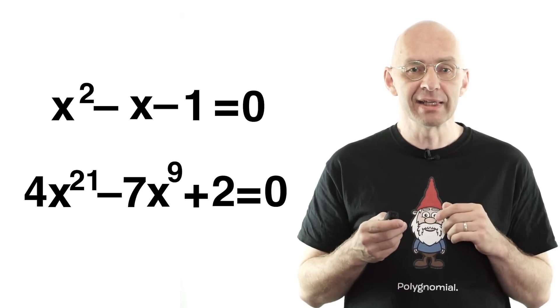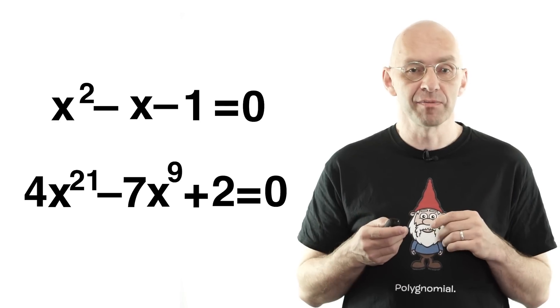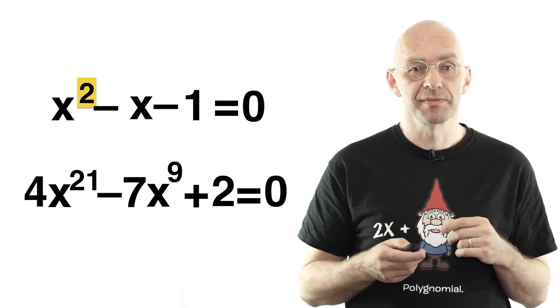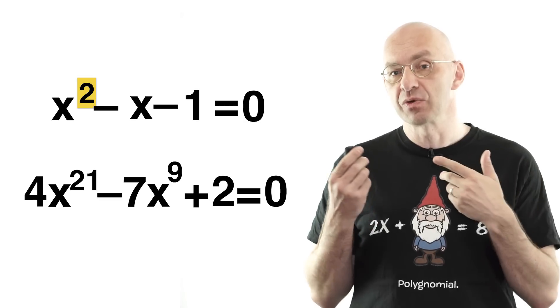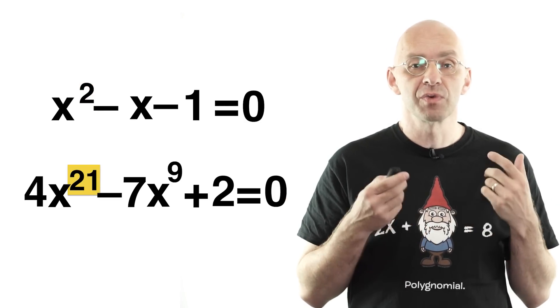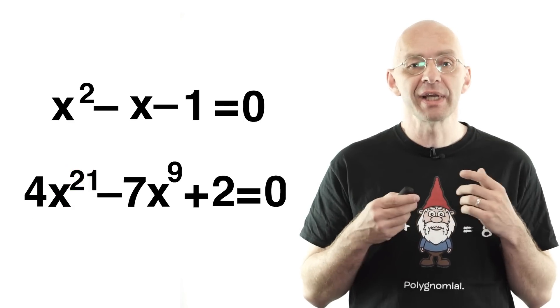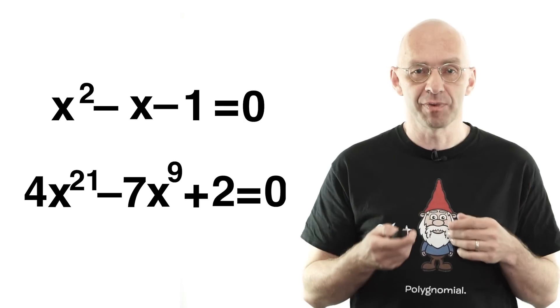A very important ingredient in listing the algebraic numbers is the fact that a quadratic equation can have at most two solutions, and a degree 21 equation like the one at the bottom there can have at most 21 real solutions, and so on. Okay, here then is a quick sketch of how you can list the algebraic numbers.